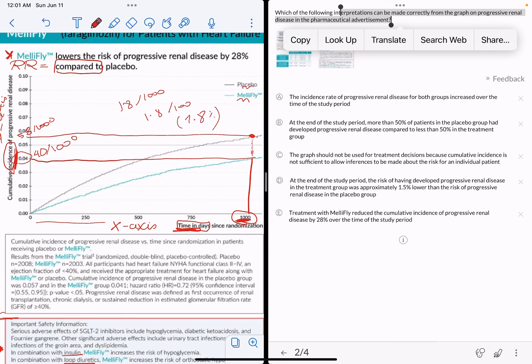And that's the relative risk. So what is going on here in the answer choices? A says the incidence rate of progressive renal disease for both groups increased over the time of the study period. Is that correct?